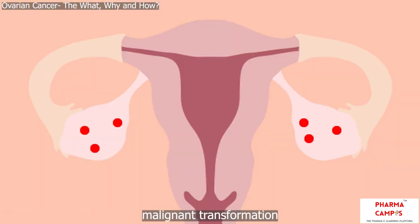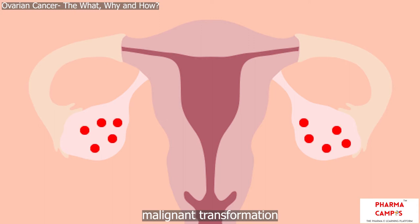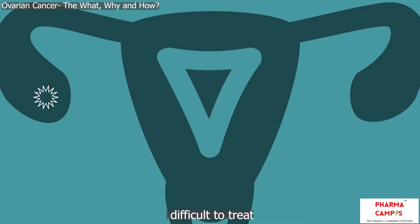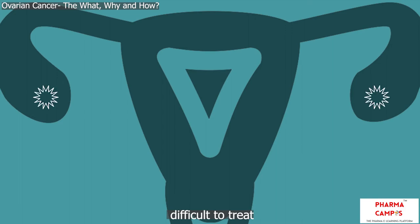Ovarian cancer refers to the malignant transformation of cells, resulting in unrestrained proliferation and the formation of a tumor. When detected early, it is possible to have a good prognosis with a better quality of life. If detected in its late stages — for example, when it has spread to the abdominal cavity or the adjacent pelvic organs — it is difficult to treat.